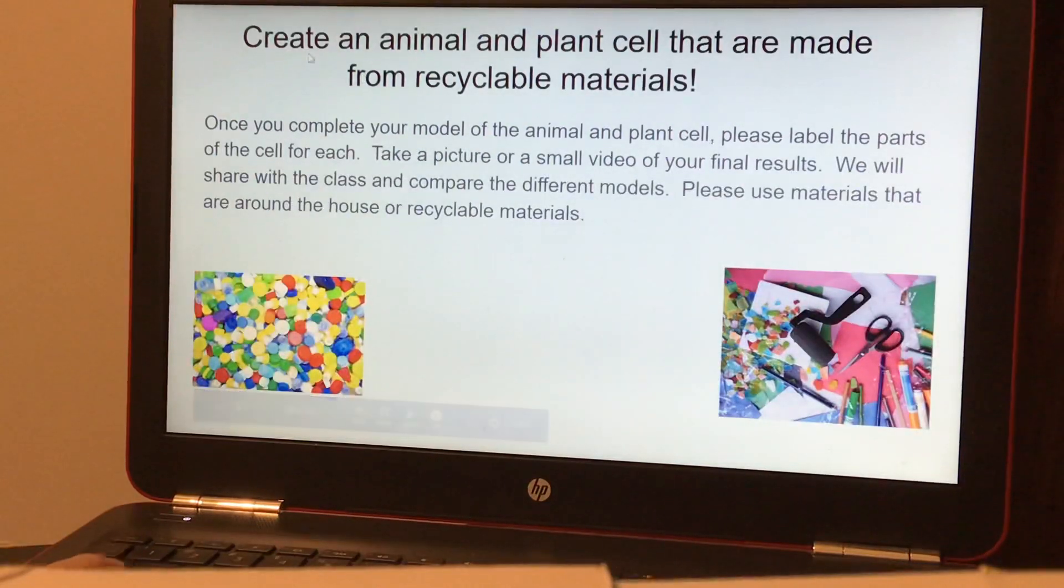So here we are. Create an animal and plant cell that are made from recyclable materials. Once you complete your model of the animal and plant cell, please label the parts of the cell for each. Take a picture or a small video of your final results. We will share with the class and compare the different models. Please use materials that are around the house or recyclable materials.